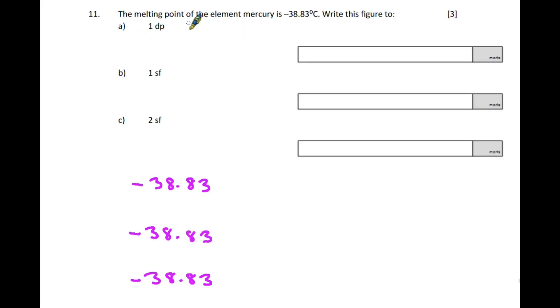Question 11: The melting point of mercury is minus 38.83 degrees Celsius. The fact it's negative doesn't make any difference, except your answer will be minus. Part A, one decimal place: the first decimal place is eight, the number to consider is three. It's below five, so it disappears. The answer is -38.8 degrees. Part B, one significant figure: the first significant figure is three. The rounding applies to the eight, which is five or above, so it rounds up to -40 degrees.